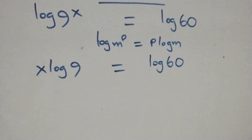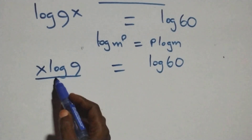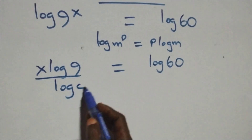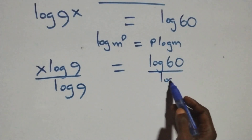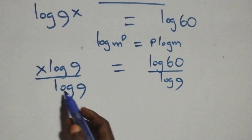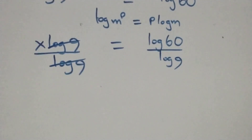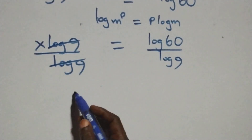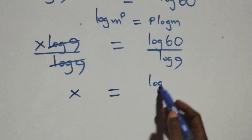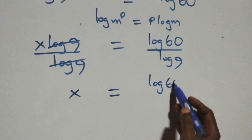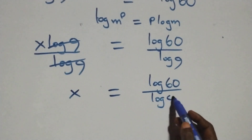The next step: we divide both sides by log 9. Dividing both sides by log 9, the log 9 cancels, and we have x equals log 60 over log 9.